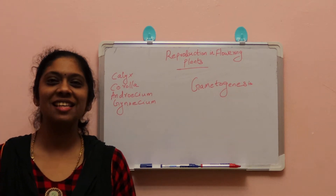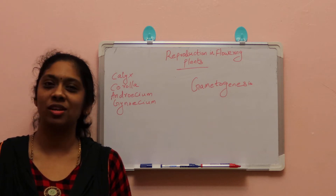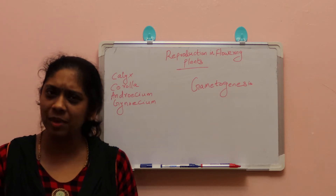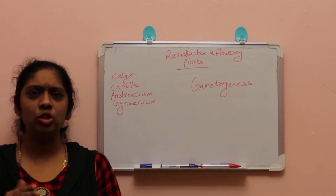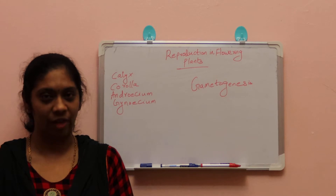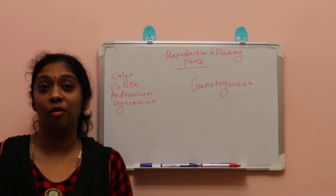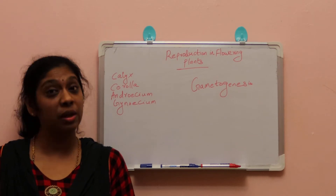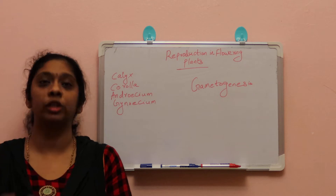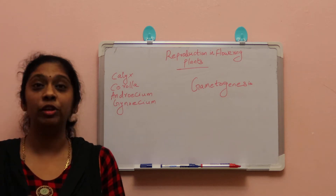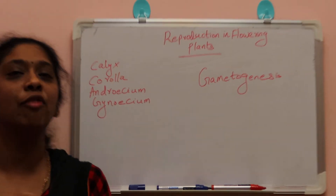Hello everyone, welcome to the class. Today's topic is reproduction in flowering plants, Class 12. Flowering plants means angiosperms, so reproduction in angiosperms. Before going to the reproduction and fertilization events, we need to know the pre-fertilization events. Pre-fertilization events are events taking place before fertilization, that is gametogenesis — formation of the male and female gametes.